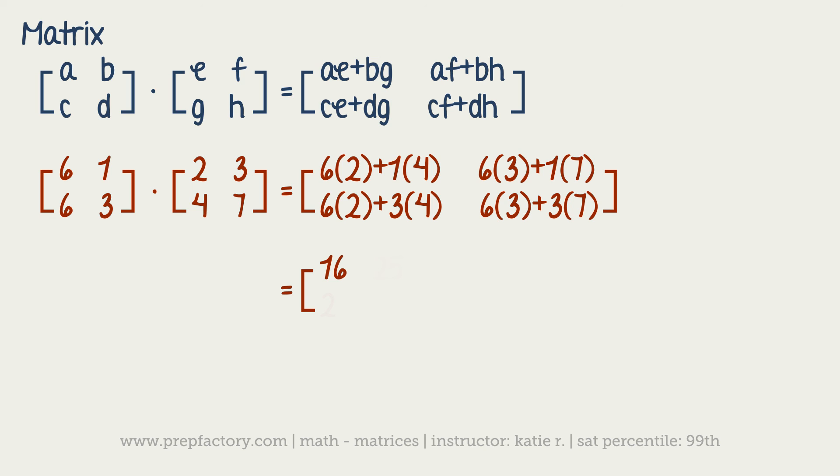Then you've got 6 times 2 is 12 plus 3 times 4 is 12, so you add 12 and 12, or 24 in this bottom left spot. Let's move up to the top right. We've got 6 times 3 plus 7, so we've got 25 here. Then we've got 6 times 3 plus 3 times 7, which would give us 39. So this would be our answer.